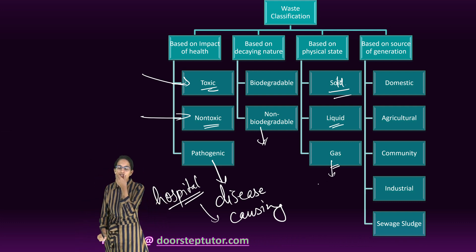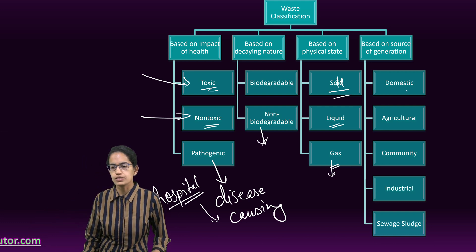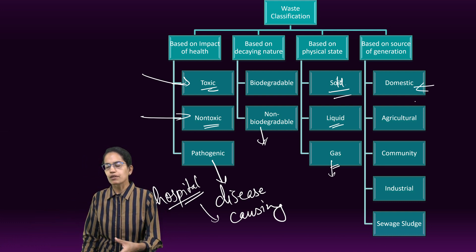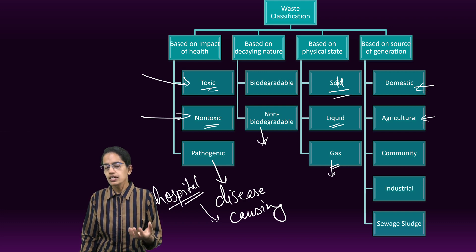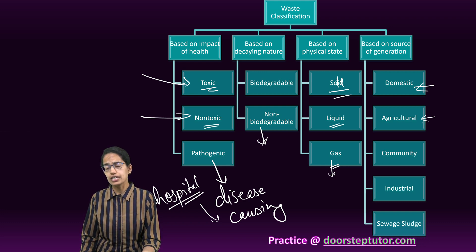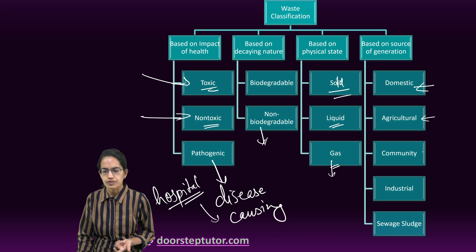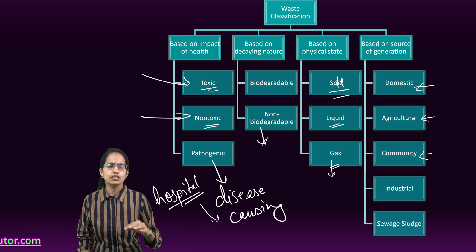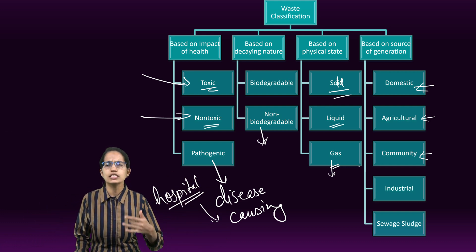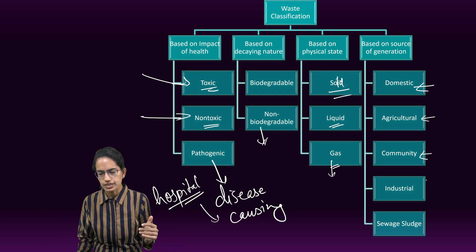The next classification is based on the source of generation. Waste generated from the household is called domestic waste — garbage, rubbish, and ash are examples. Agricultural waste is generated from agriculture: pesticides, fertilizers, and crop residue are all examples. Community waste comes from a community at large — from educational institutions, offices, and shops.